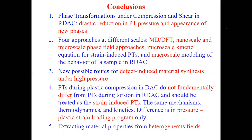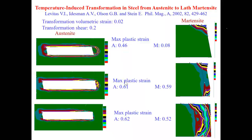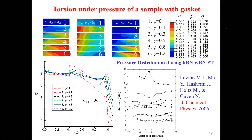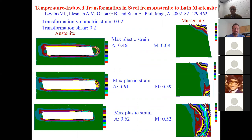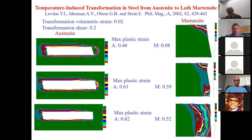Thank you for your attention. Any questions? The first question from Arjan: for the slide showing the change from austenite to martensite in steel — was this for pure iron or an alloyed steel? It is an alloyed steel. Do you remember the carbon content? No, I don't remember — there are several elements and it was almost 20 years ago, but it is in the paper.